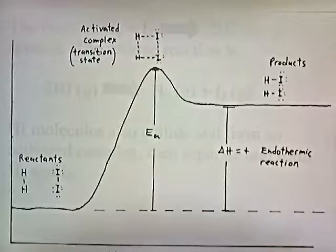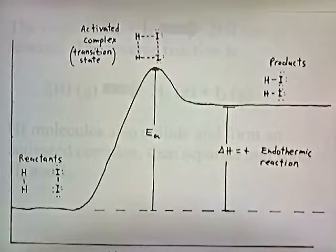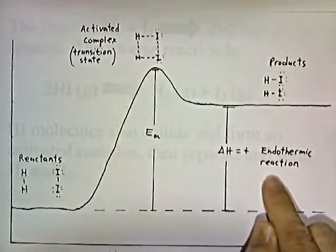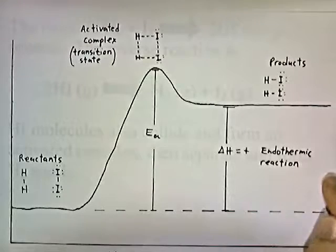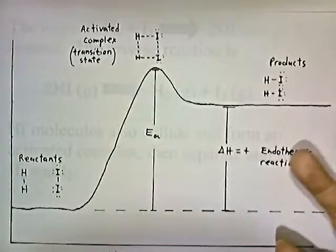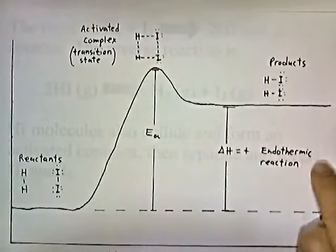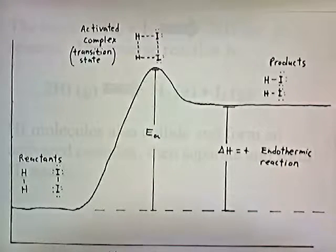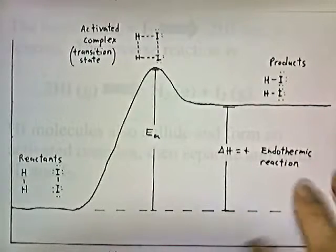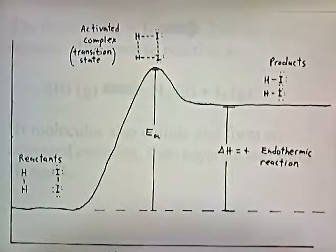Since the reaction absorbs energy, the vessel that contains the reaction will become cold. So in an endothermic reaction, the container where the reaction occurs gets cold — the chemicals are absorbing the heat from the surroundings.